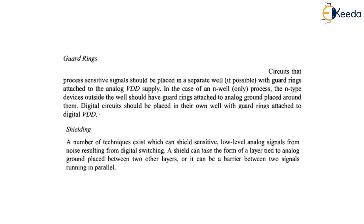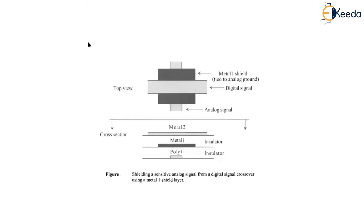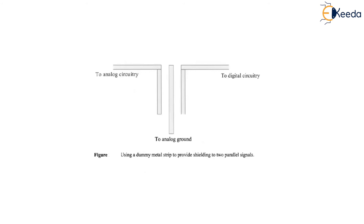The next point is shielding. A number of techniques exist to shield sensitive low-level analog signals from noise resulting from digital switching. A shield can take the form of a layer tied to analog ground placed between two other layers, acting as a barrier between two signals running in parallel. As shown, a metal one shield tied to analog ground is used between layers — polysilicon, then metal layer, then insulator — demonstrating shielding of a sensitive analog signal from a digital signal crossover using metal one shielding. Another technique uses a dummy metal strip to provide shielding between two parallel signals going to analog and digital circuitry respectively.